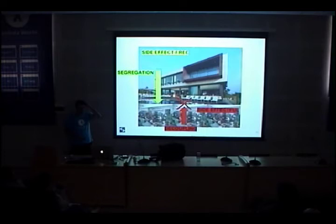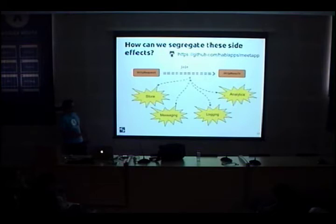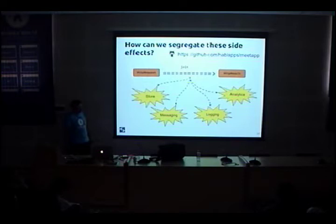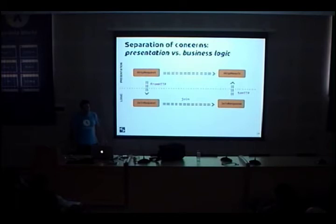Let's see how we can deal with this design challenge from an object-oriented perspective. All the code shown can be found in the provided repository. In order to segregate effects when implementing this microservice, what we normally do in object-oriented programming is follow the separation of concerns design principle. We want to decouple the presentation layer from the business logic layer.